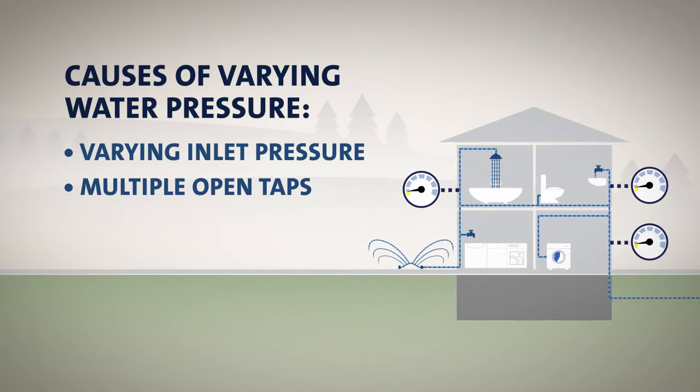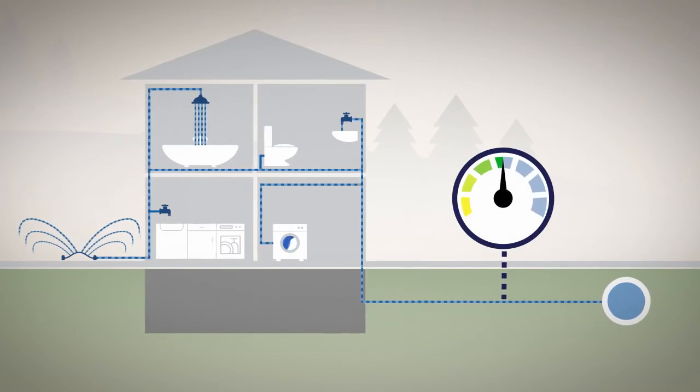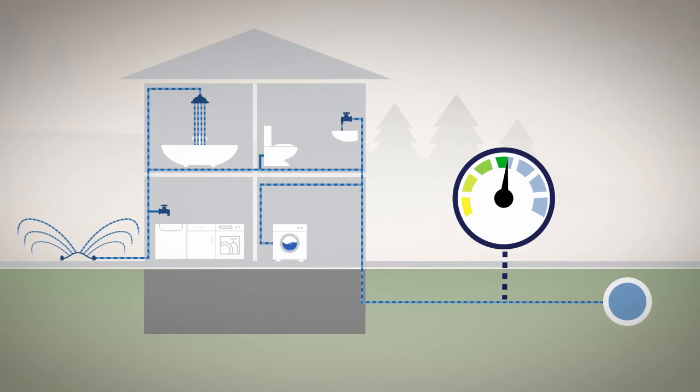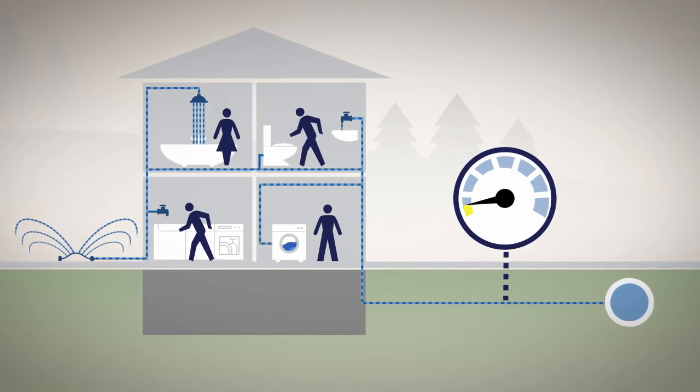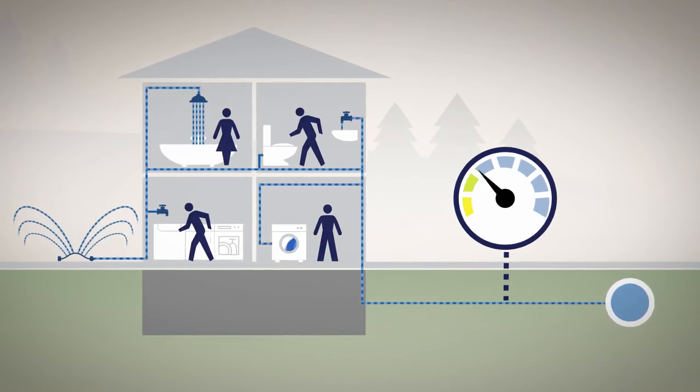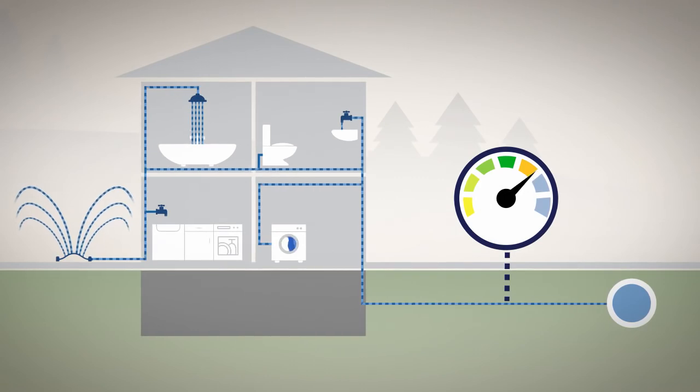Let's start with the inlet pressure. During the course of a day, the water pressure in the city mains will change along with the water consumption in the entire system. In the mornings and evenings when most people are at home showering, cleaning, and cooking, the water pressure is low. But when they are away during the day, the water pressure increases. This variation can be felt directly at the taps and showers.